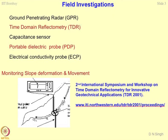Time domain reflectometry — TDR — is a good example of how field investigations can be conducted to obtain thermal and electrical properties of geomaterials. Capacitance sensors and FDR sensors have also been discussed. Portable dielectric probes are being used for determining dielectric properties of the soil, and hence the moisture content or the degree of salinity of the soil mass. Electrical conductivity probes (ECP) are also used for the same purpose — determining the level of salinity and moisture content, and sometimes temperature as well.